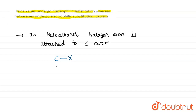Since the halogen is more electronegative, it pulls electrons toward itself and acquires a partial negative charge, while the carbon gets a partial positive charge. Due to this partial positive charge on the carbon atom, a nucleophile can attack the electron-deficient carbon, resulting in the displacement of the halogen — a weaker nucleophile. Thus, this reaction undergoes nucleophilic substitution.